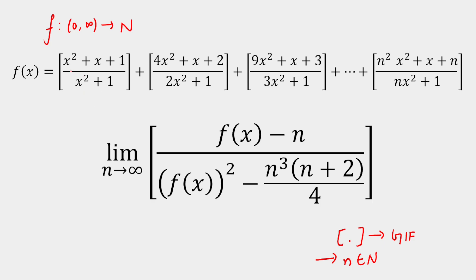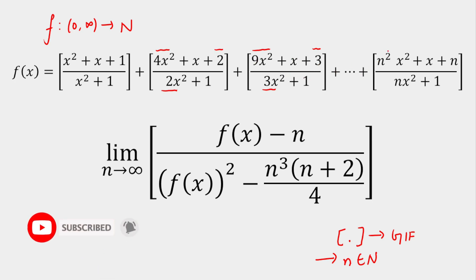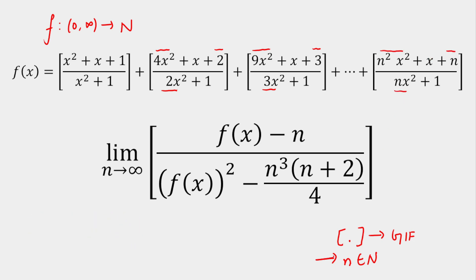The first value is GIF of (x² + x + 1) / (x² + 1). You can notice the pattern: 2² is written here, 2 is written here, and 2 is written here. Similarly, 3² is written here, 3 is written here, and 3 is written here. Everything follows the same pattern — only this number changes. So for the nth term, it is n², n, and n here, where n belongs to natural numbers, as already given.